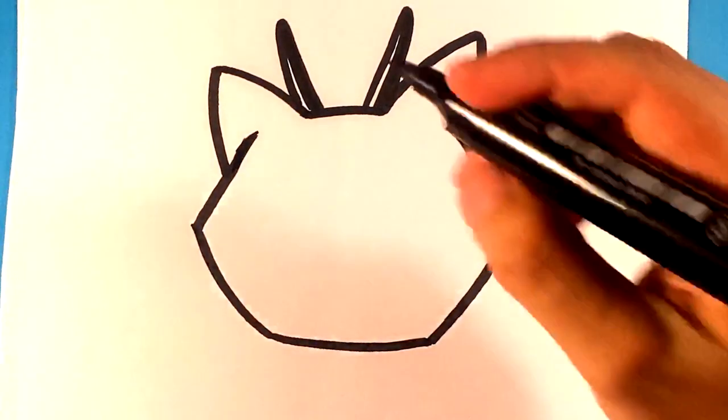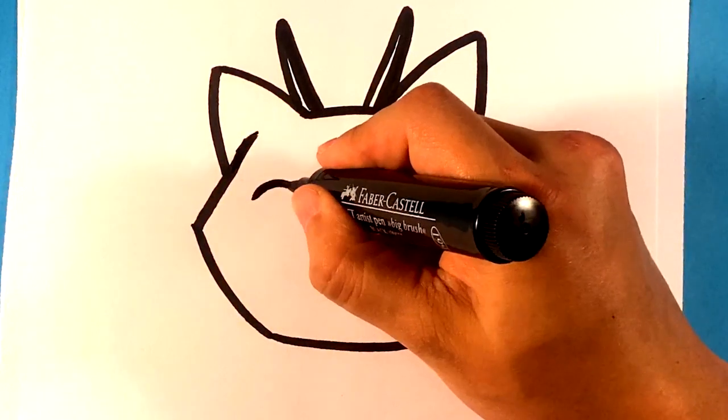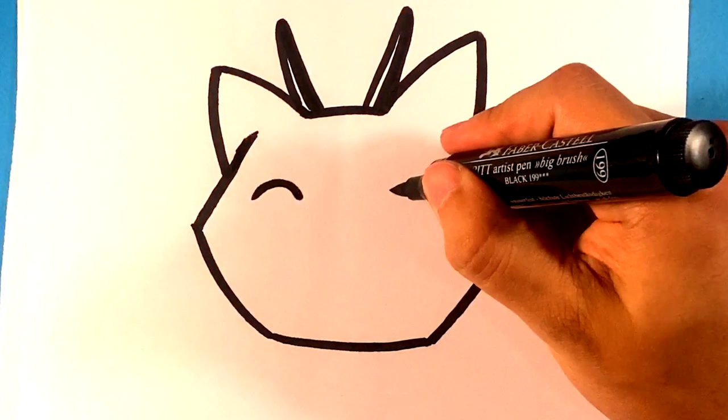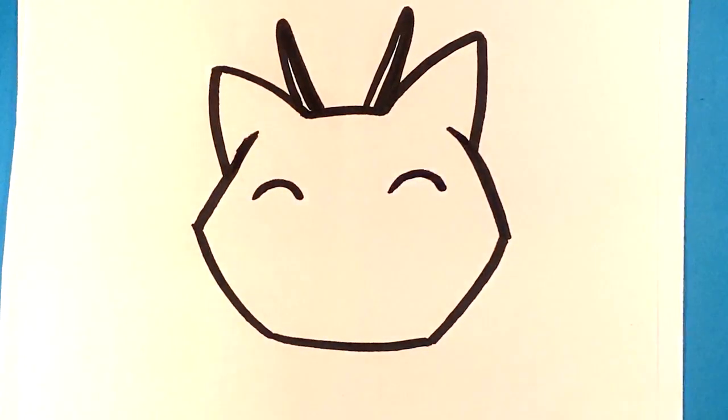Then I'm gonna draw an upside down U for the eye, draw an upside down U for the other eye. That's gonna make it look like, you know, that kind of look. I love that look for just cute stuff. It's so good.